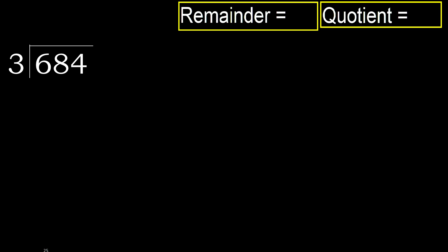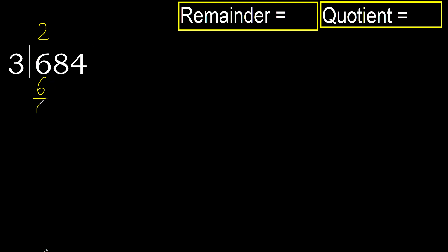684 divided by 3. Starting with 6: 6 is not less, therefore we work with 6. 3 multiplied by which number is nearest to 6 but not greater? 3 multiplied by 2 is 6 — not greater. 6 minus 6 is 0.